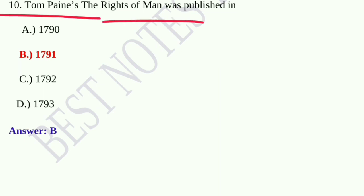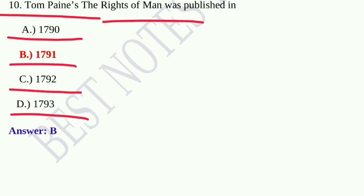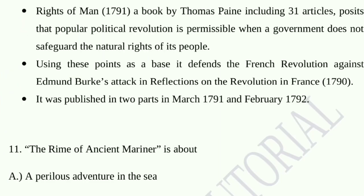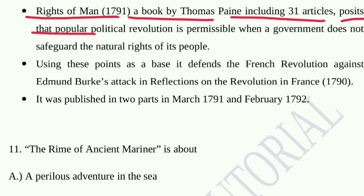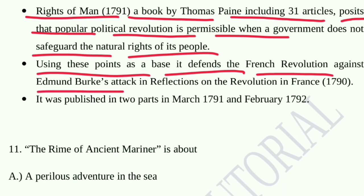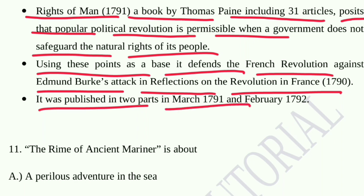Question number ten: Tom Paine's The Rights of Man was published in option A, 1790; option B, 1791; option C, 1792; option D, 1793. Option B, 1791, is the correct answer. Rights of Man is a book by Thomas Paine including 31 articles. It posits that popular political revolution is permissible when a government does not safeguard the natural rights of its people. It defends the French Revolution against Edmund Burke's attack in Reflections on the Revolution in France (1790). It was published in two parts in March 1791 and February 1792.